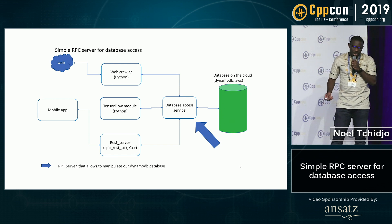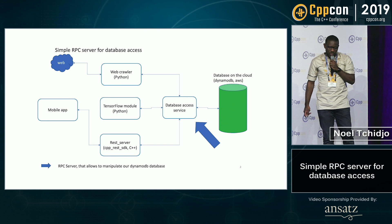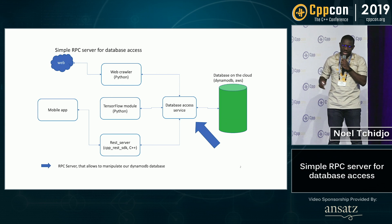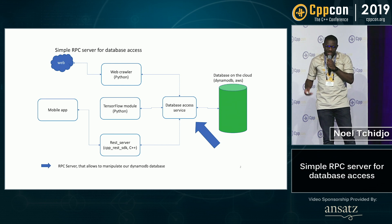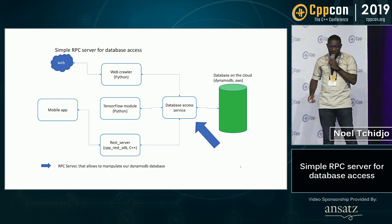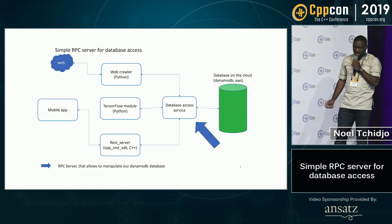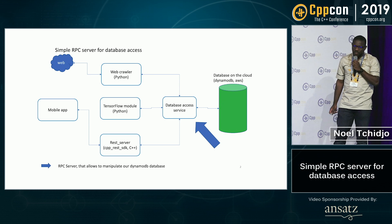Let's say that we do this in Python. We will need a TensorFlow module — the deep learning framework from Google — and we will use this to recognize similar images between announcements so that we can catch duplicate announcements. Let's say we use the Python API of TensorFlow. We will also need a REST server, so let's choose a C++ REST SDK to handle our REST calls. We will need a database, so let's pick one on the cloud — DynamoDB, the NoSQL database of Amazon Web Services.